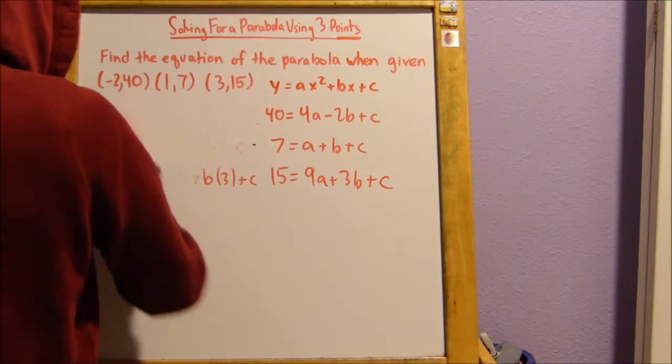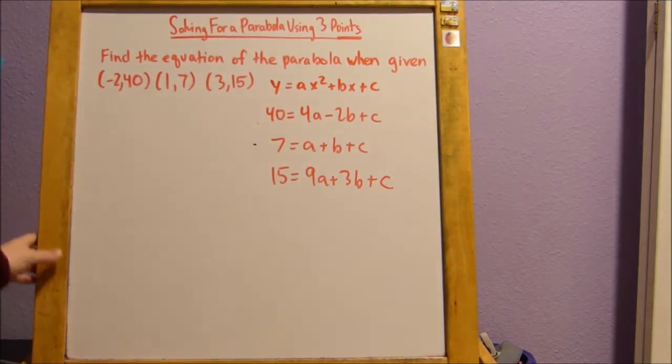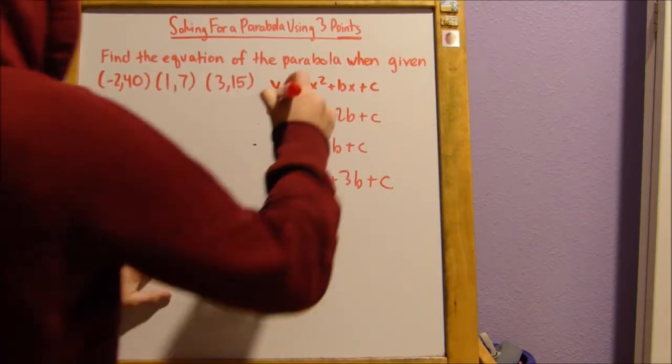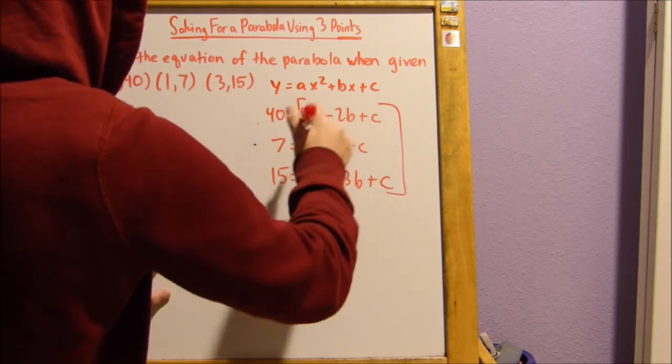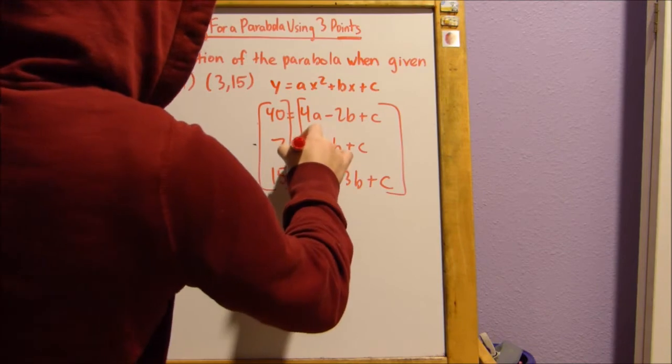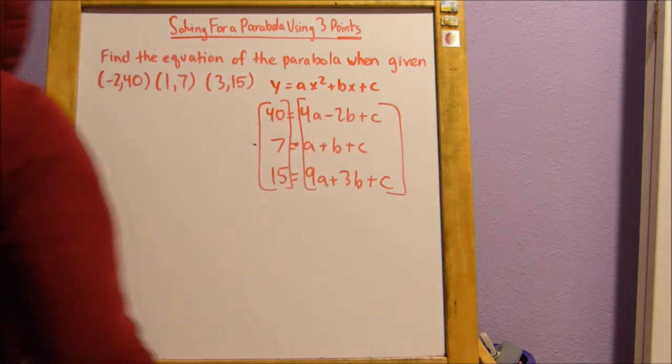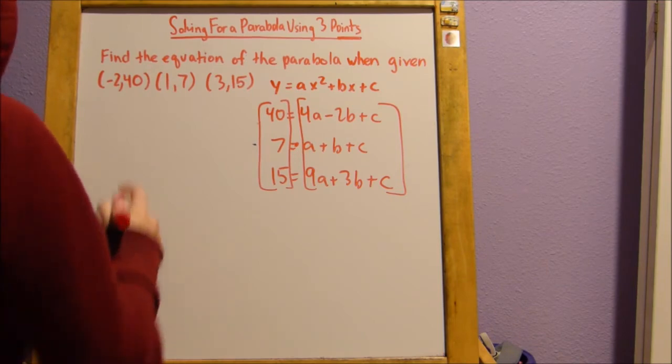Let me just erase this to make more room. So what we're going to do is set up a matrix with the coefficients of these equations. And we're going to have another matrix, but we're going to multiply it times this matrix. This sounds a little bit confusing at first, but don't worry. It's going to all be okay.